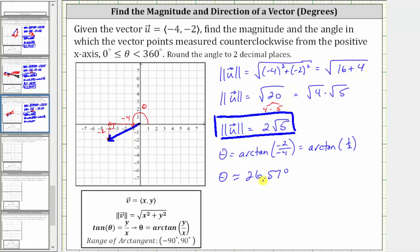Let's begin by sketching the angle of 26.57 degrees, where the terminal side would point in the opposite direction of our angle. The terminal side would be here, where this angle measures 26.57 degrees.